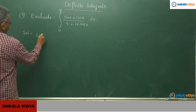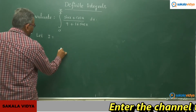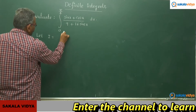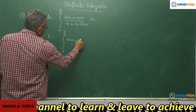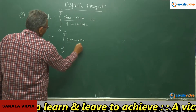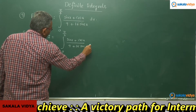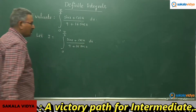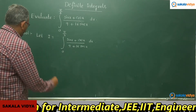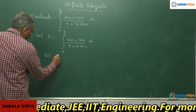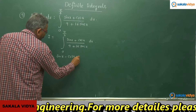Let I equal to the integral from 0 to pi/4 of (sin x plus cos x) divided by (9 plus 16 sin 2x) dx. Let us carry out the substitution: let sin x minus cos x = t.